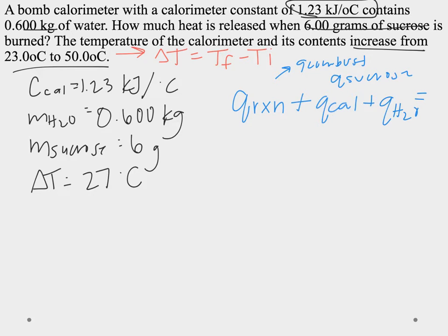Now these are our three systems. These are the three ways that we can transfer heat in this reaction. The first law of thermodynamics says that all of the heats have to equal zero. First law of thermodynamics says energy can neither be created nor destroyed.